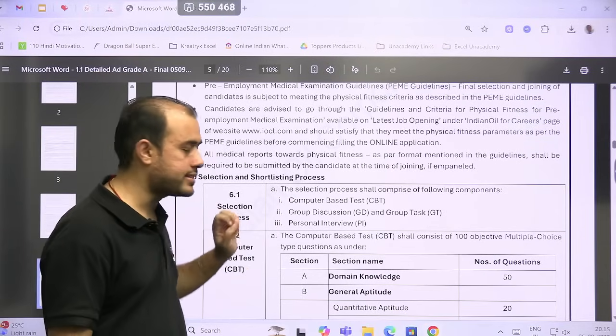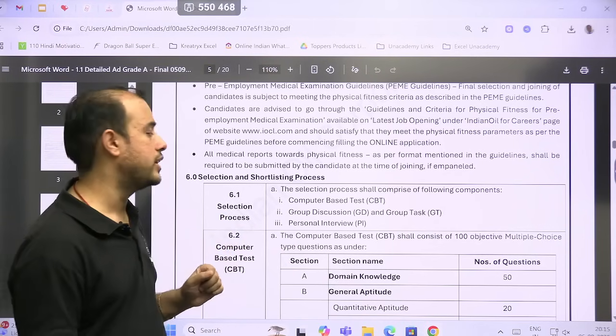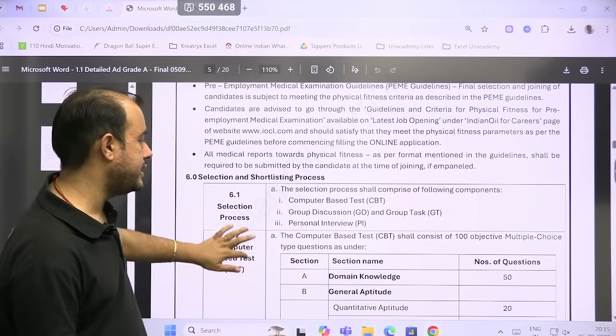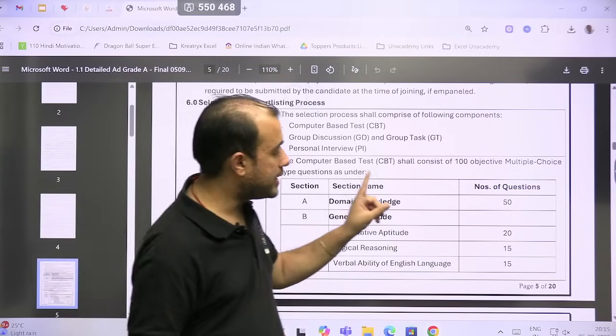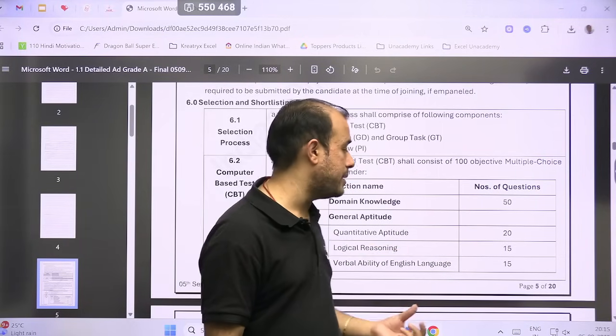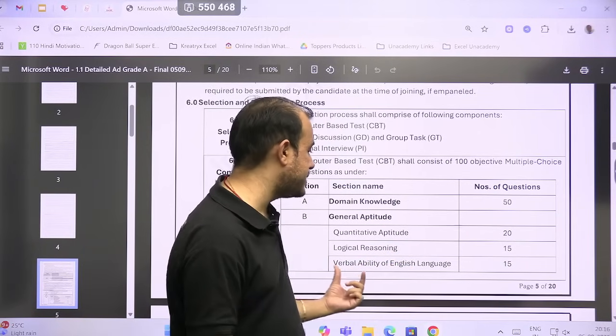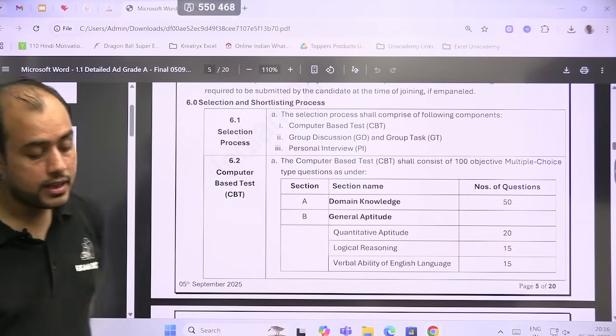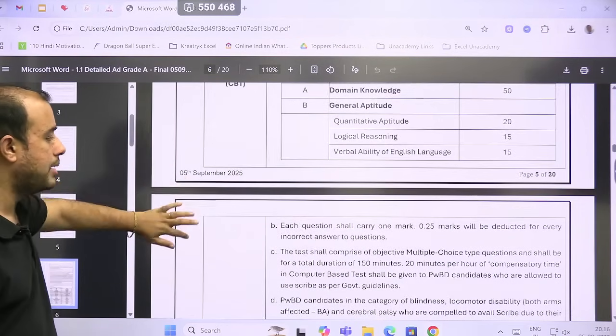The selection process has three stages: computer-based test will be conducted on 31st October, then GD and GT, and lastly personal interview. For CBT, your domain knowledge—that is electrical or instrumentation—will be for 50 marks, 20 marks for quant, 15 marks for logical reasoning, and 15 marks for verbal ability. So that means 50-50 technical and non-technical marks.